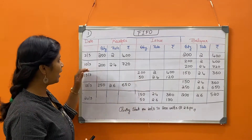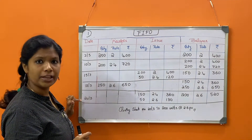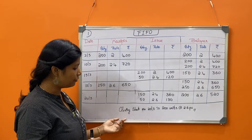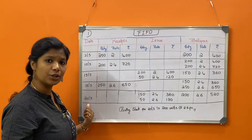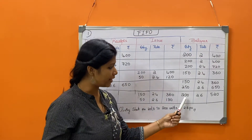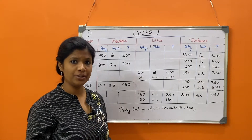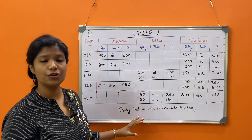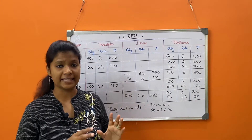We have entered all date-wise transactions: 2nd, 10th, 15th, 18th, and 20th March. Once you complete the valuation of issue of materials table, you must write the closing stock. Closing stock as on 20th March (the last date in the question): 200 units at rate 2.6. This must be mentioned after each completed table.